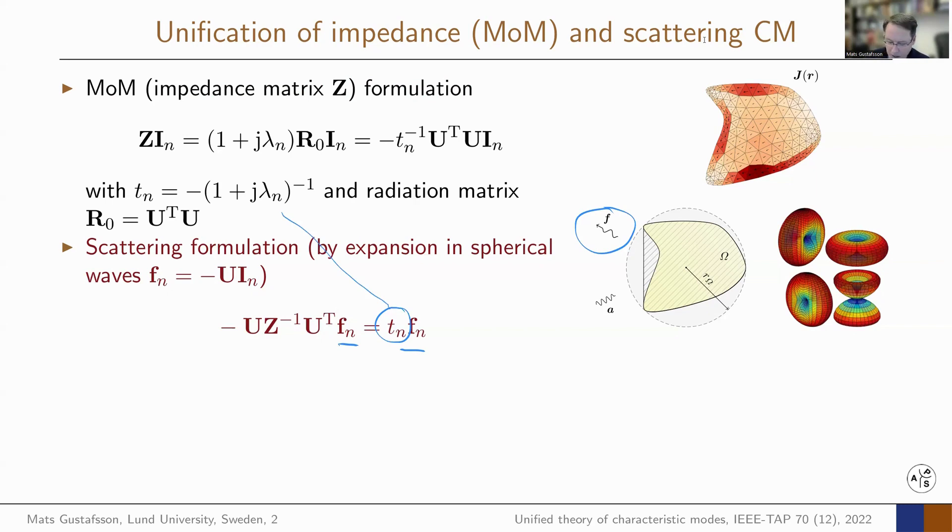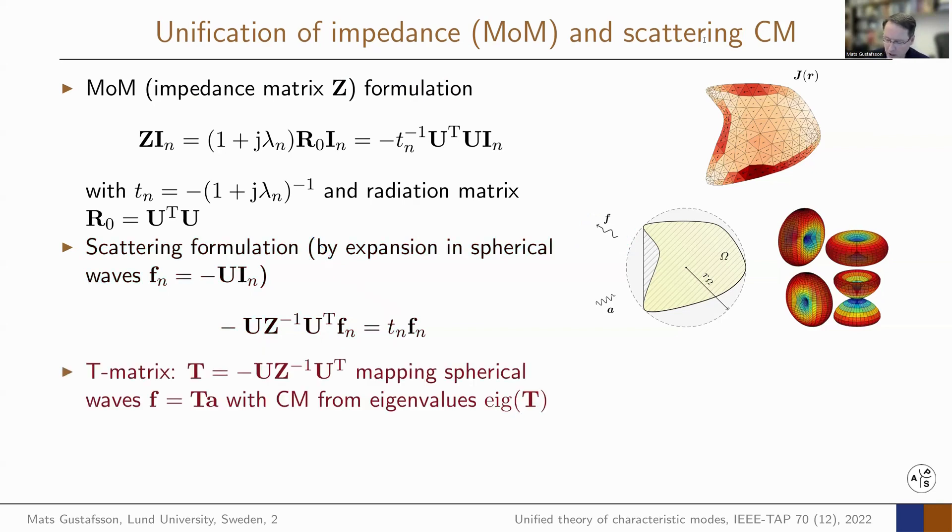The left hand side here is recognized as a transition matrix or T-matrix. It maps these spherical waves, incoming or regular waves to outgoing waves. The characteristic modes are determined by taking the eigenvalues of this T-matrix.